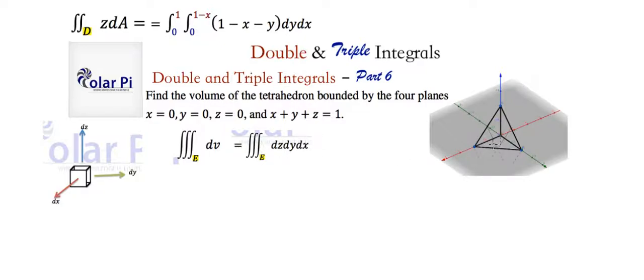The bounds for y and x are the bounds for our region d. We integrate with respect to z first, so the integral of dz is just z, evaluated from 0 to 1 minus x minus y.